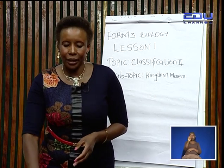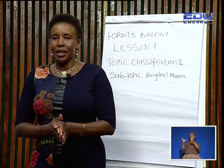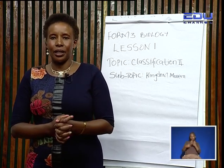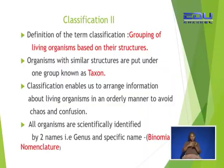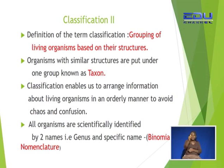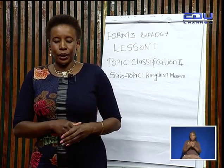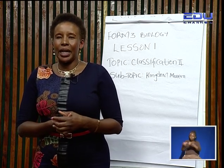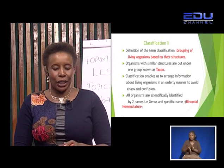So in this topic, the introduction was done in Form 1, where Classification 1 was done. Just a quick recap of what was discussed in Form 1: Classification is the grouping of living organisms based on their structures. When we are grouping these living organisms, we use their external structures and put them in one group known as a taxon. In Form 1, there were seven taxonomic units of classification which were discussed.